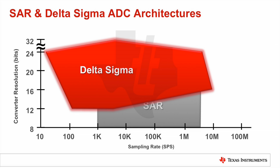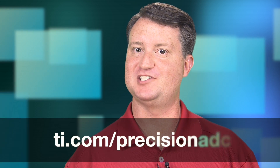Delta Sigma ADCs typically have a greater range of resolution options when compared to SARs. While the majority of Delta Sigma ADCs have lower sampling rates than SAR ADCs, the TI portfolio ranges between a few samples per second up to around 10 mega samples per second. Select Delta Sigma ADCs are available with up to 32 bits of resolution, making the architecture very well suited for applications that need an extremely high resolution.